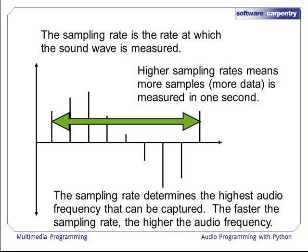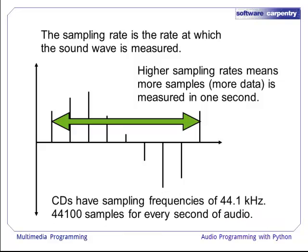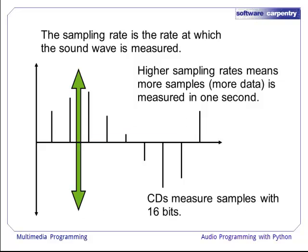The faster the sampling rate, the higher the audio frequency that can be represented by that signal. CDs have sampling frequencies of 44.1 kHz, or 44,100 samples for every second of audio. This means that it can represent up to 22 kHz in the audio frequency spectrum. The bit depth, or bit width, is the precision of each sample. Larger bit depths mean that the audio is measured more precisely, and it also means a larger number is used to represent each audio sample. CDs measure samples with 16 bits.